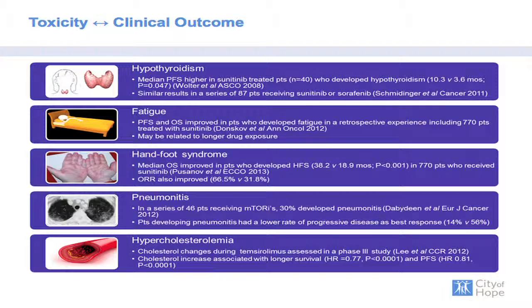Turning to mTOR inhibitors, in a small series, the subset of patients who developed pneumonitis had a lower rate of progressive disease as best response. Based on the pivotal temsirolimus data, cholesterol increases seem to be associated with longer survival and progression-free survival. So there are toxicities we don't traditionally focus on that may be associated with clinical outcome.